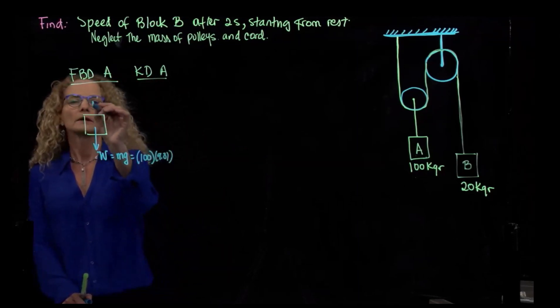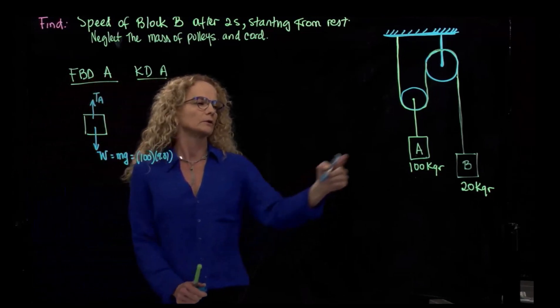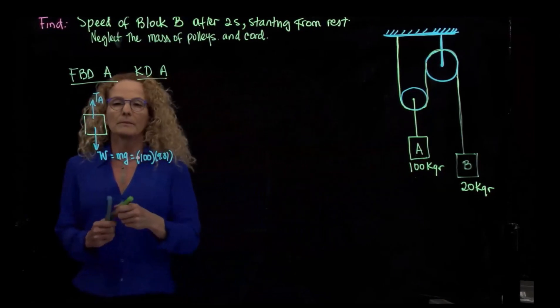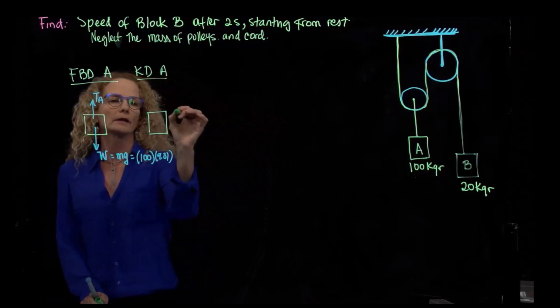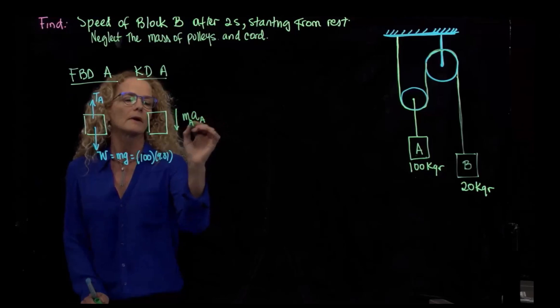And then we have this tension. Let's call this tension, tension of A, which is this cord. And the kinetic diagram, let's assume that I have an acceleration, mass times acceleration of A, and this is the mass of B.